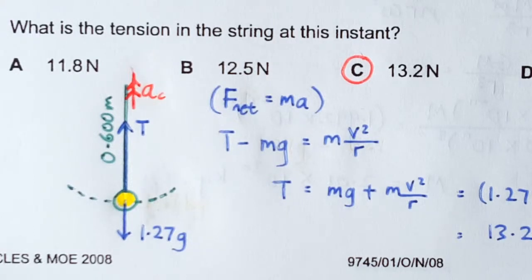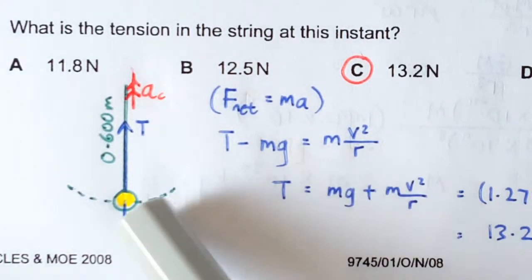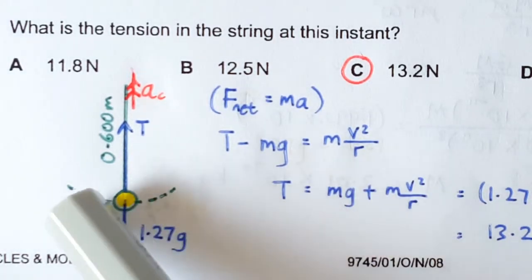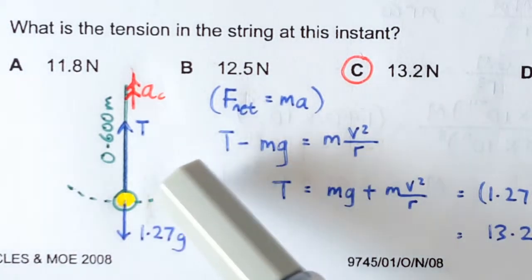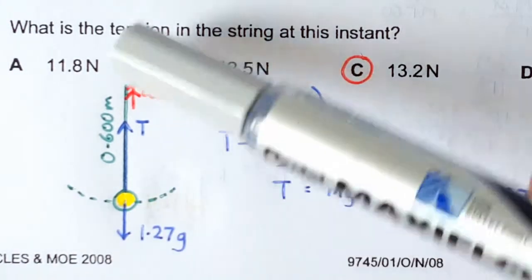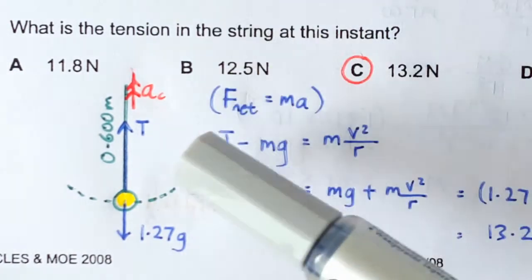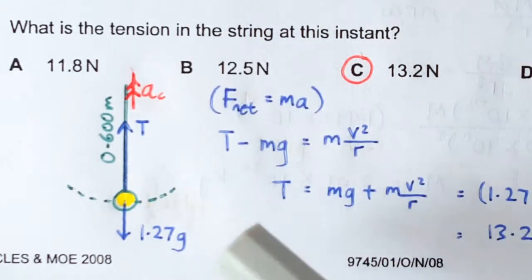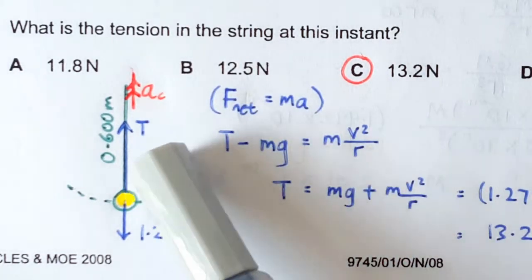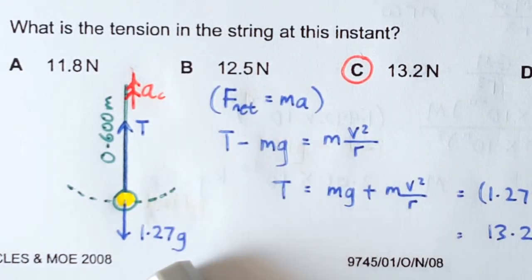We have a circular motion here. When it's at the bottom of the swing, the center of the circular motion is somewhere up there, so the centripetal direction is in the upward direction. That's why we take the upward tension minus the downward weight and equate it to the required centripetal force.